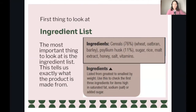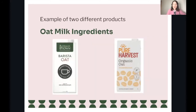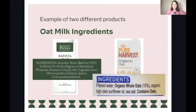The important thing to look at is the ingredient list — this tells you exactly what the product is made of, exactly what is in it. Two examples I have here are oat milk. You could do this for all types of milks — soy, almond, everything — but I've just chosen oat as an example. Here we've got the ingredients. I know this is a bit blurry; I couldn't get a good high-resolution screenshot. So we look at Australians Own Barista Oat, and one thing you can probably tell straight away is the amount of ingredients in each of these.